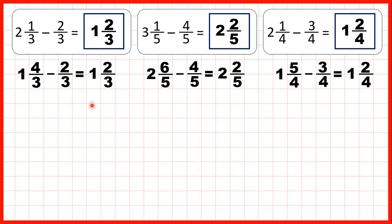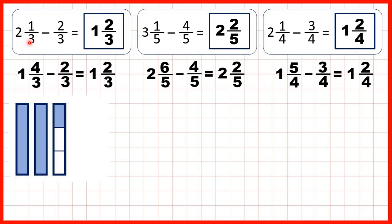It's easier to understand what's happening here if we show the fraction bars. For this first question, we had two and one-third — that's two wholes and one-third — but we needed to take two-thirds away. So what we did is split one of our wholes into thirds. That gave us one whole and four-thirds, so then we could take two-thirds away to give us one whole and two-thirds as our answer, shown in blue.